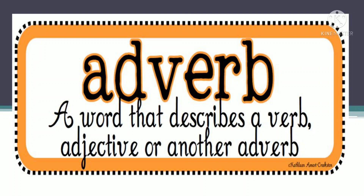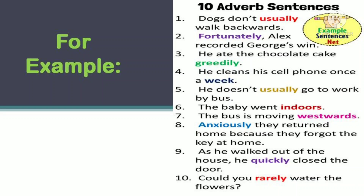Another example: 'He went late.' Here 'went' is the verb. Vahe gaya kab? Time. Time is 'late.' So this is another example of adverbs. Let's see some other examples of adverbs. You can see on the screen: 'Dogs don't usually walk backwards' — the highlighted word 'usually' is the adverb. Second: 'Fortunately, Alex recorded George's win.' Third: 'He ate the chocolate cake greedily.' And you can see more examples on the screen.